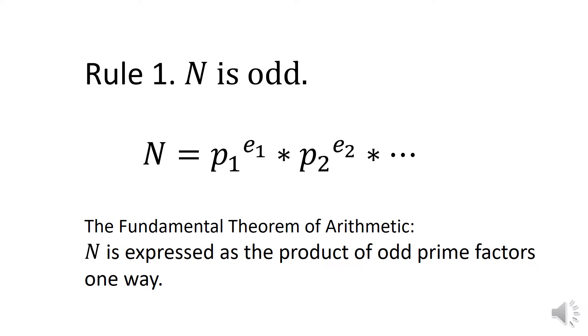Rule one states that N is odd and its divisors are odd primes. The fundamental theorem of arithmetic states there is only one prime factorization for an integer. Each prime factor is unique with a count of each prime listed as its exponent. N is p₁^e₁ times p₂^e₂ for all of N's prime factors. N is expressed as the product of odd prime factors one way.